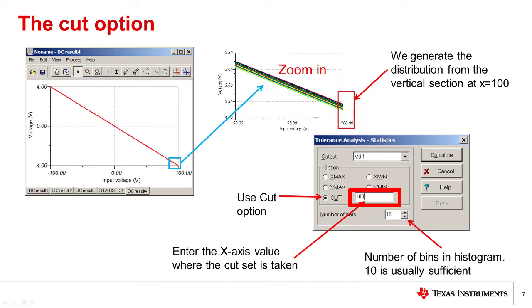The x-axis value for the cut set, which is 100 volts in this example, is entered in the adjacent box. Finally, select the number of bars that will be displayed in the histogram. In general, 10 is sufficient.